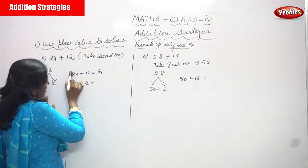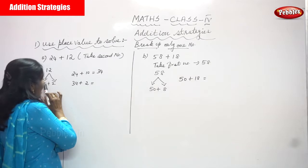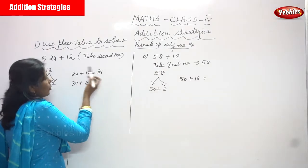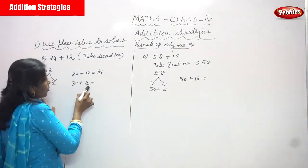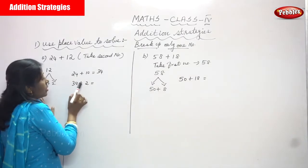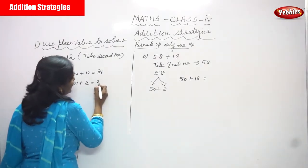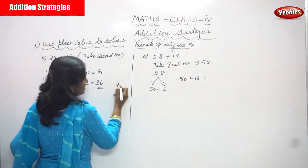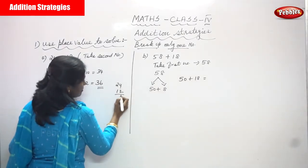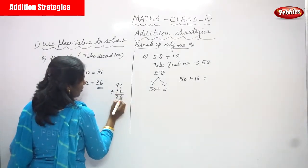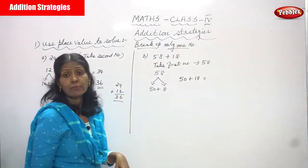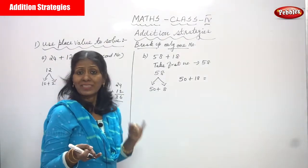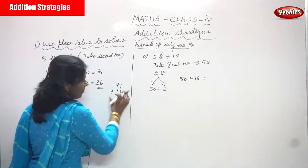Now we write the first number 24 and add the tens place first: 24 plus 10 gives 34. Then we add the ones place value, which is 2: 34 plus 2 gives 36. For the simple method: 4 plus 2 is 6, 2 plus 1 is 3, so the answer is 36.